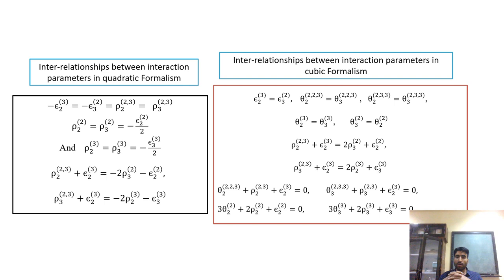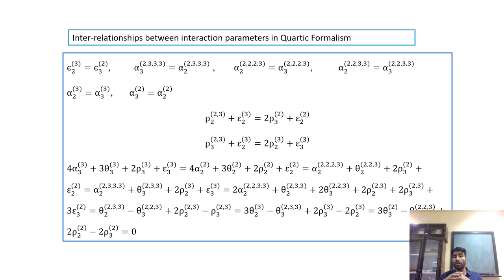Using such formalisms and such procedures, we obtain interrelationships. In case of Darken's Quadratic Formalism, there is a direct relationship between the second and first order interaction parameters. In the cubic formalism, we also obtain the interaction between third, second, and first order interaction parameters.